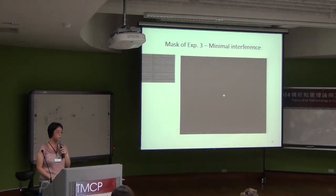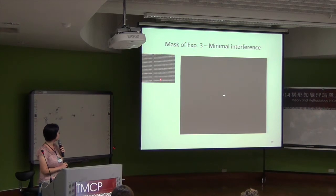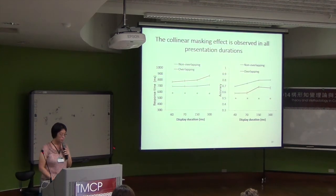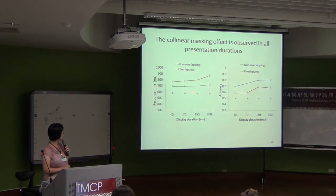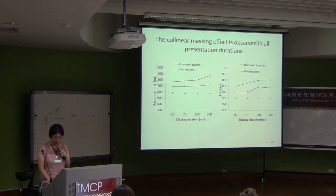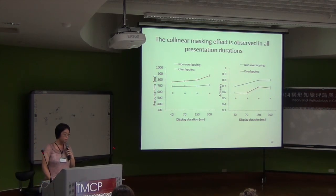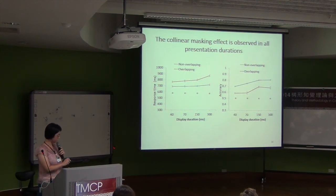So we have Experiment 3 with minimum interference. In this condition, we simply turn off the search display and present a cross at the center. In this case, all presentation durations show the collinear masking effect in both reaction time and accuracy. So we may conclude that the collinear masking effect can be observed at very early durations.